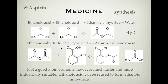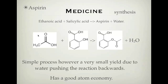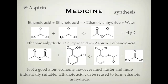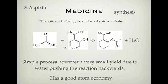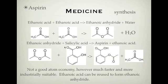So these are the two reaction pathways. The first one is simply ethanoic acid and salicylic acid. The second one is ethanoic anhydride and salicylic acid. You need to understand these two reactions, what happens in each one, and which one is better and which one is worse. That's our synthesis of aspirin — how we produce it.